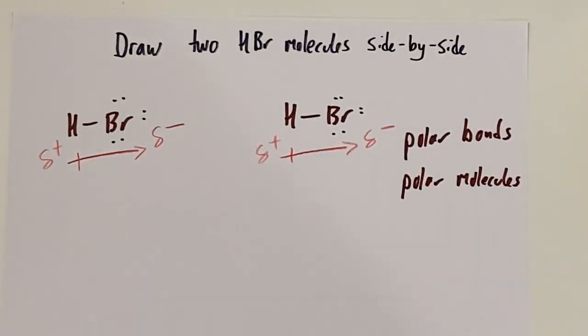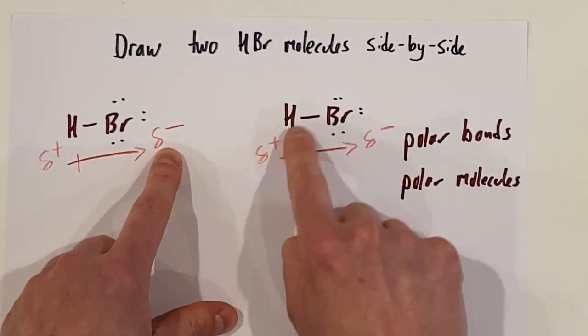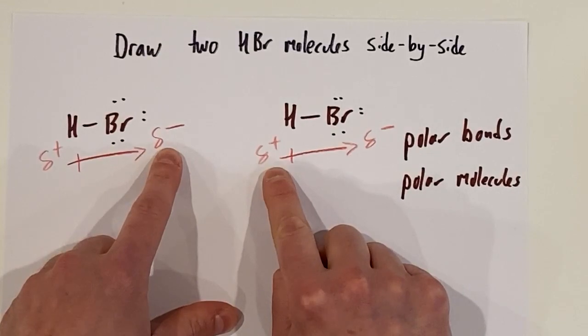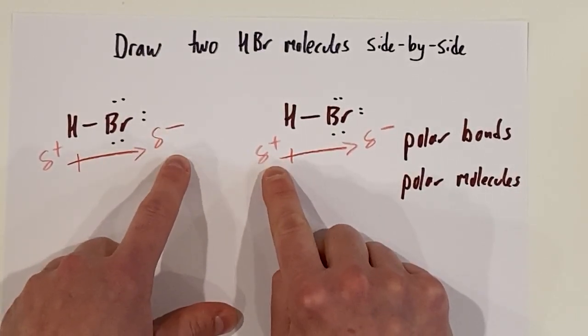Next step here is we have to determine, would there be any attraction between the two different molecules? When does attraction come about? It comes about when you've got opposite charges. Opposites attract. This bromine has a partial negative charge. This hydrogen has a partial positive charge. Negative and positive. What are they going to do? They will attract.